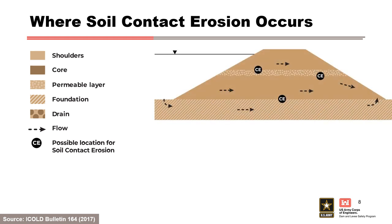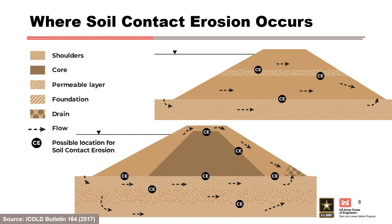In this figure, a homogeneous embankment dam is shown with the potential for soil contact erosion at a layered fill due to segregation during construction and at the interface with a coarse foundation soil. In the bottom figure, a zoned embankment dam is shown with the potential for soil contact erosion at high reservoir levels above the core and for erosion into coarse layers in the foundation.